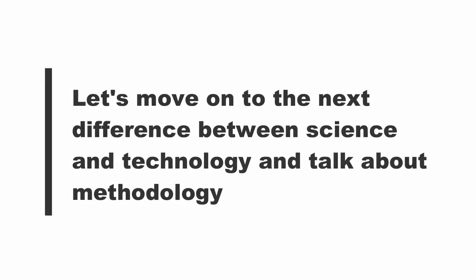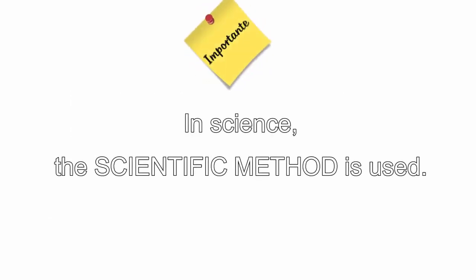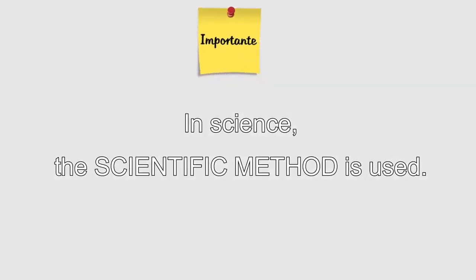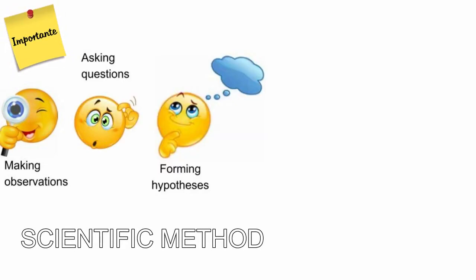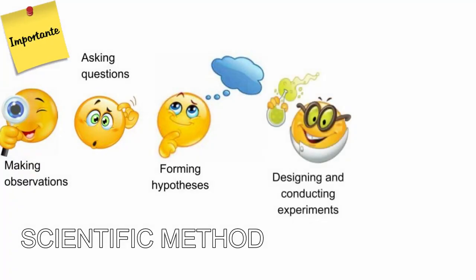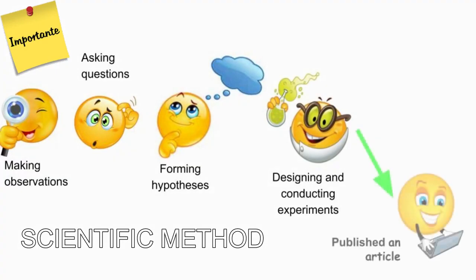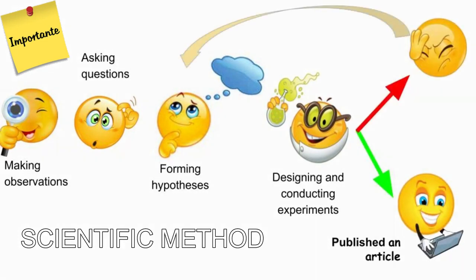Let's move on to the next difference between science and technology and talk about methodology. In science, the scientific method is used. The scientific method is a process based on making observations, asking questions, forming hypotheses about what and why something occurs, and finally designing and conducting experiments in order to assess the predictions. When this process leads to the discovery of novel information, it can be published for others to review and utilize. If the initial hypothesis is invalidated, a new hypothesis and experiment can be created.